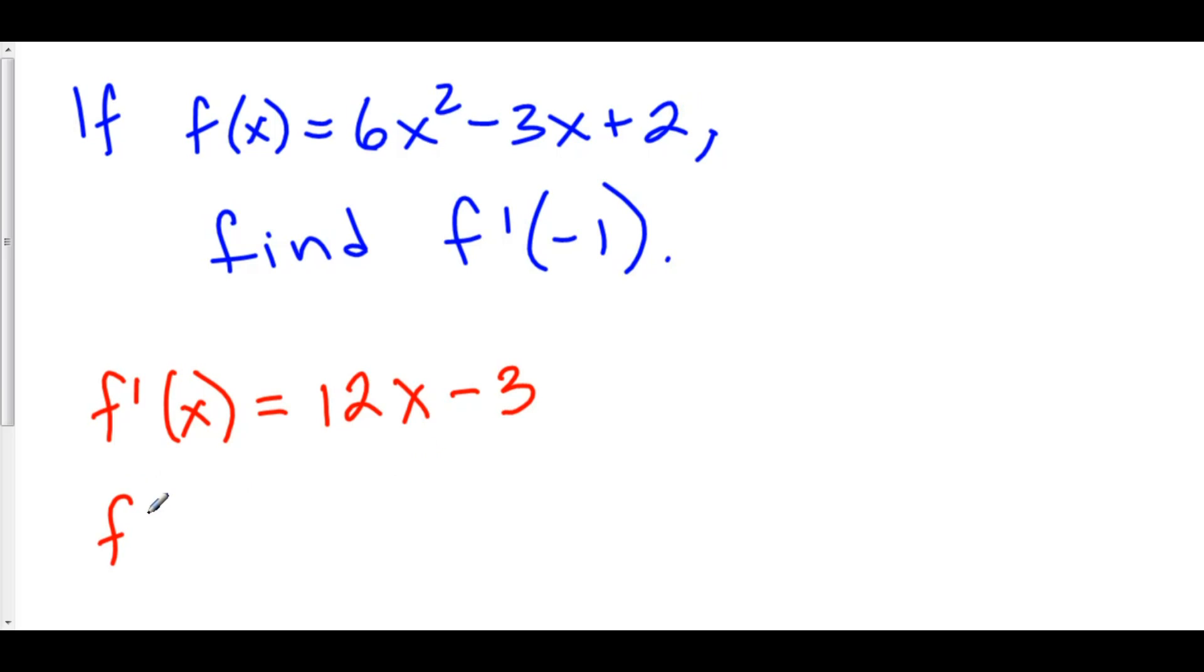So, f prime of negative 1 is equal to negative 12 minus 3, which is negative 15.